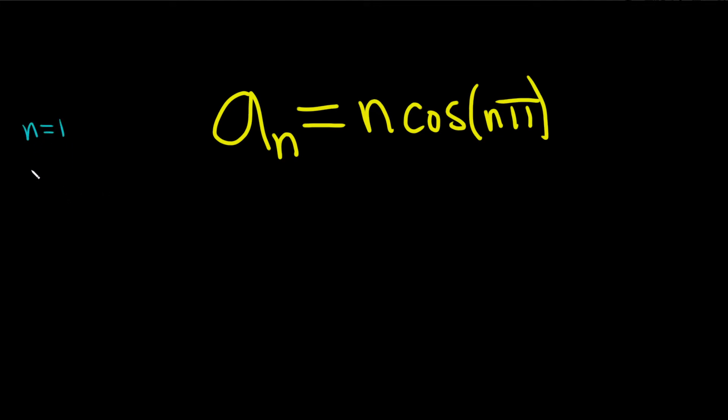So if you plug in 1, you get cosine of pi, which is just negative 1. If you plug in 2, you get cosine of 2 pi, which is 1. If you plug in 3, we get the cosine of 3 pi, which is negative 1. If you plug in 4, starting to see a pattern now, you get cosine of 4 pi, which is 1.